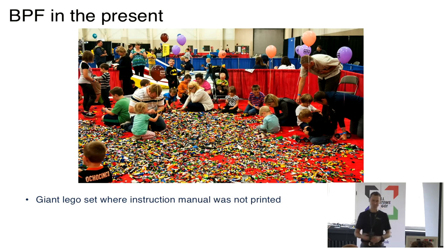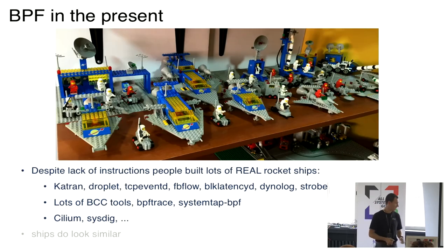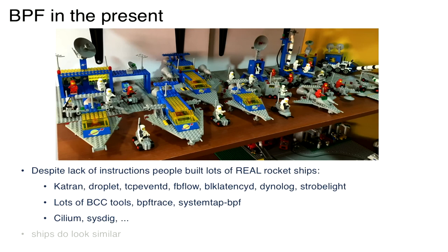When BPF was sort of unleashed to the world, it was like a new toy with no manual — lots of new things, and people started creating different things. Lots of real rocket ships were built. At Facebook we built Katran, Droplets, PFND, and a bunch of others. Only Katran is open-sourced so far. Outside, in the public repository, there are tracing tools, BCC tools, BPFtrace — still in very active development — and systemtap BPF. On the networking side, Cilium is probably the biggest open-source project leveraging BPF.